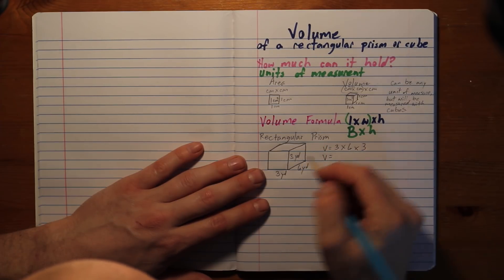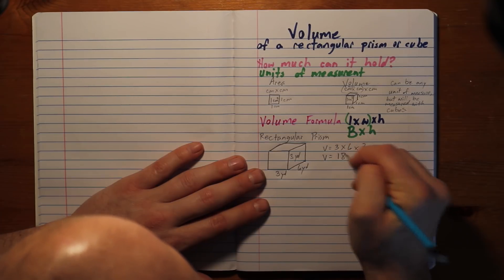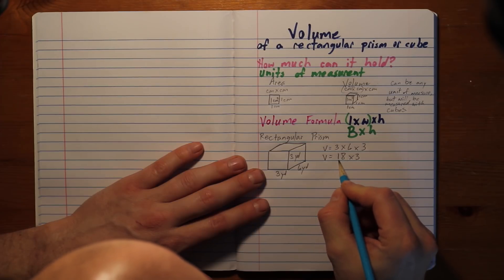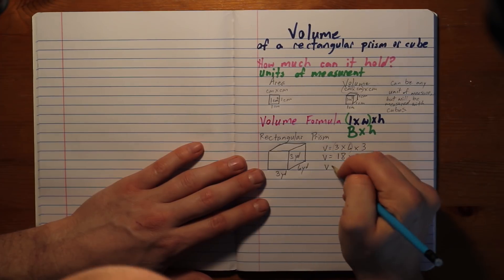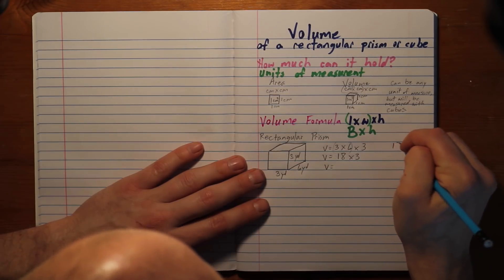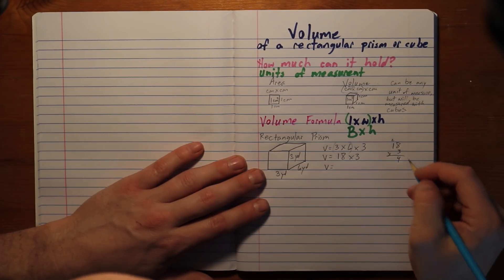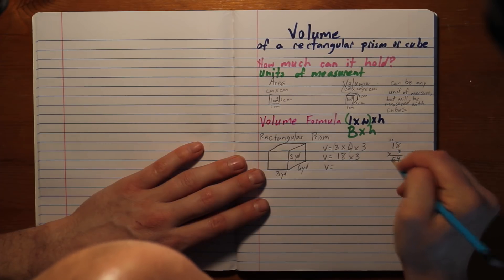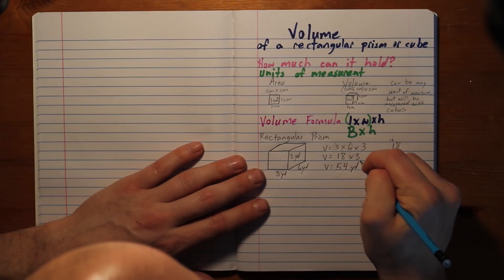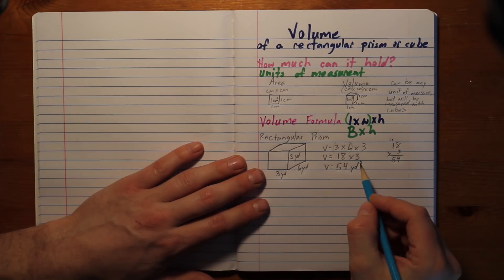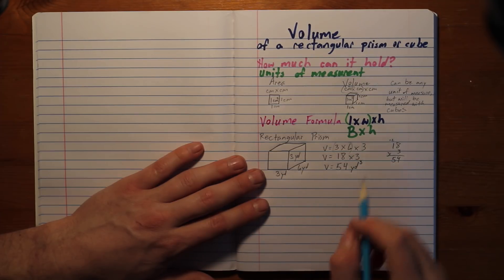So my formula would be volume equals three times six times three, length times width times height. Or if I wanted to, my base would be three times six, which is 18. So I'm going to say 18 times how many layers? Three. So my base times height. Or if you look at this, it's the same thing. This is the area times the height. So what is my volume? Let's go ahead and figure this out. 18 times three, three times eight is 24. Put the four down here. Two. Three times one is three, plus the two is five. So 54. So my volume is 54 yards cubed. Don't forget my unit of measure. Because we're measuring with cubes, we are going to use that three. So 54 cubic yards.